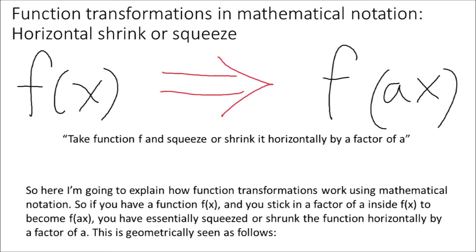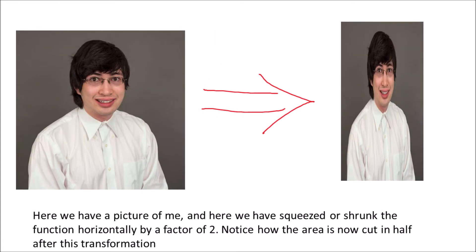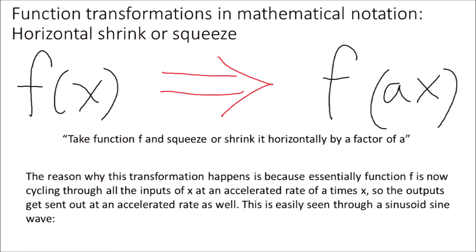Here I'm going to explain how function transformations work using mathematical notation. If you have a function f(x) and you stick in a factor of a inside to become f(ax), you have essentially squeezed or shrunk the function horizontally by a factor of a. Here we have a function squeezed or shrunk horizontally by a factor of 2. Notice how the area is now cut in half after this transformation. The reason is that function f is now cycling through all the inputs of x at an accelerated rate of a times x, so the outputs get sent out at an accelerated rate as well.